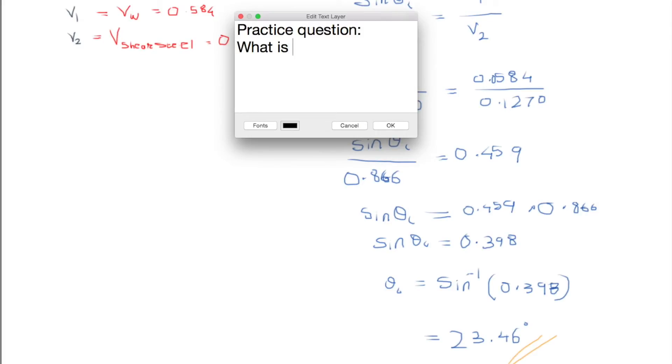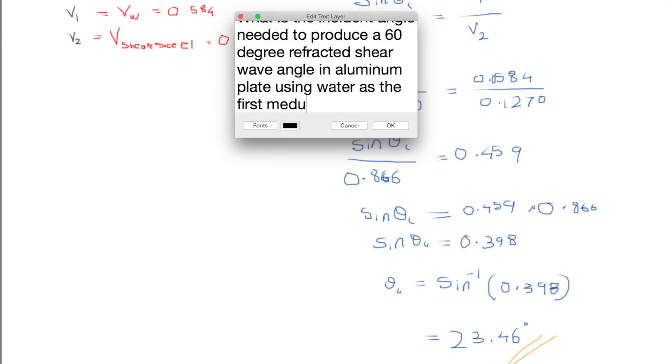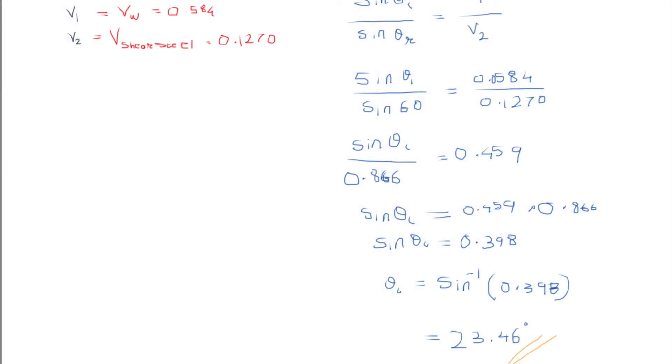What is the incident angle needed to produce a 60-degree refracted shear wave angle in aluminum plate using water as the first medium? That's your question, let me know the answer.